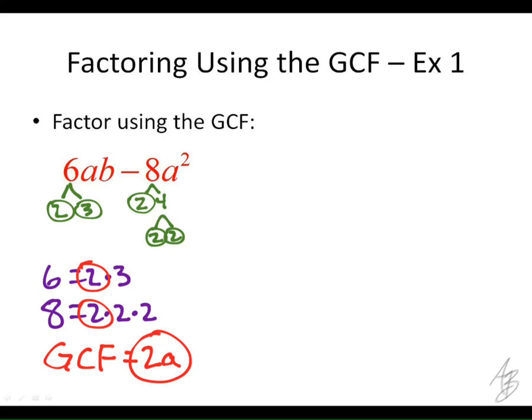The next thing we're going to do is draw a picture appropriate for this problem. How many terms are there in this expression? There's two terms. So how many rectangles do you think there are going to be in our picture? Two — there's going to be a rectangle for each term, at least when we're factoring using the GCF. So I'm going to draw a picture with two rectangles.